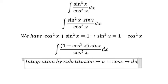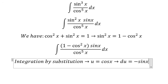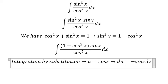cosine x, du equal to negative sine x dx. Because we don't have the negative, so we put negative on the left.